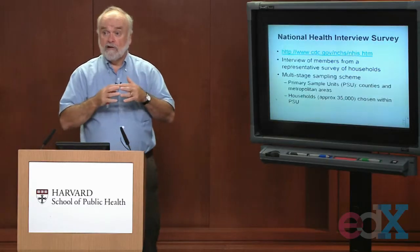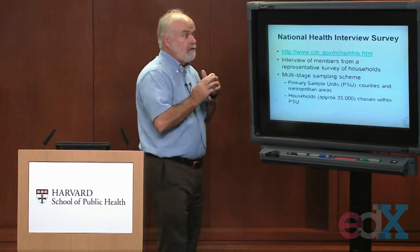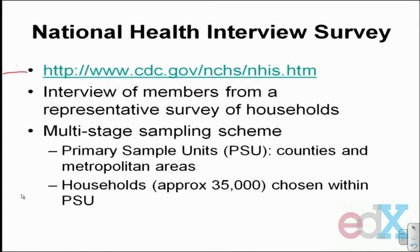NHANES is a very useful source for doing cross-sectional studies based on surveys done every year throughout parts of the United States. Another source of cross-sectional data is the National Health Interview Survey, and information about it is available on its web page. Basically, this is solely an interview of members living in a household. What they do is create a representative, essentially random, survey of households existing in the United States. The survey is conducted in two steps using a multi-stage sampling scheme.